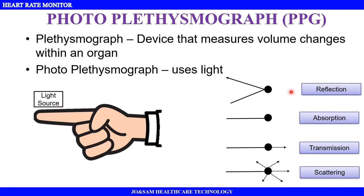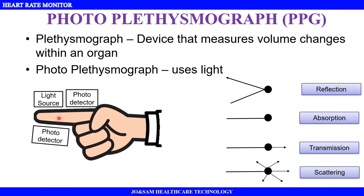With all these processes occurring in the finger, once the light source illuminates, it will reflect. We measure the reflected light using photo detectors placed alongside the light source — that is the reflectance method. In the transmittance method, the photo detectors are placed on the opposite side to measure scattered and transmitted light.